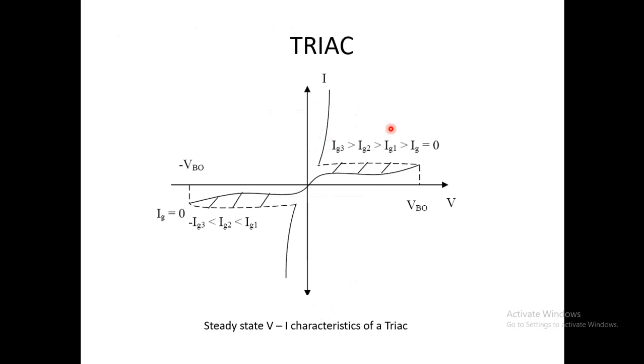That can be seen in this VI characteristic of TRIAC. So voltage is positive, current is positive. Now you can see, TRIAC shows same characteristics as that of SCR in first quadrant. So we will say that current is positive and voltage is positive.